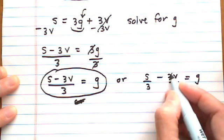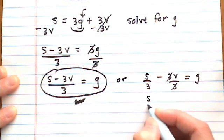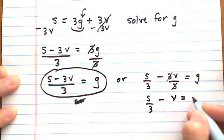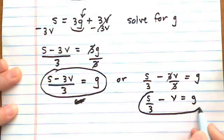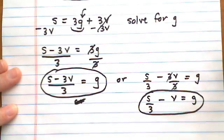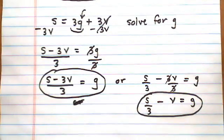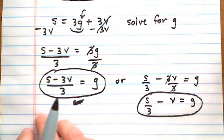Then the 3 over 3 here reduces down to 1, so I have another format for the final answer: s over 3 minus v equals g. Both of those are equivalent to the same thing.